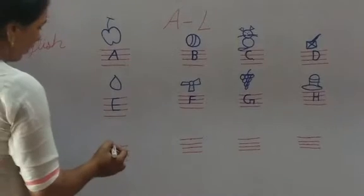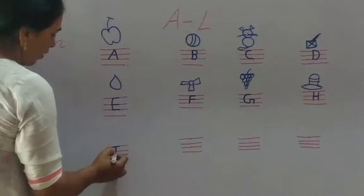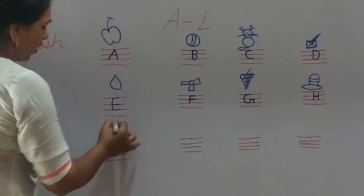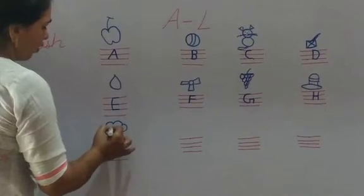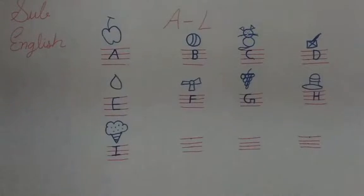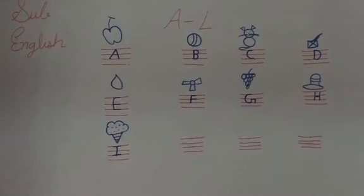Then, I. I for ice cream. I for ink pot. Here we draw ice cream. Because, all you love ice cream. Now, tell me, what comes after I? Yes. What comes after I? It's J.